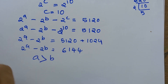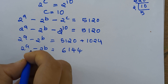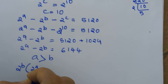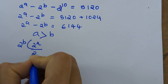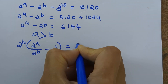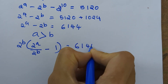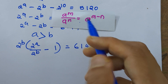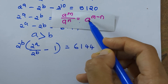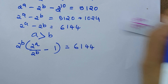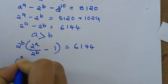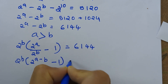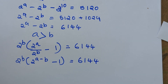Since 6144 is positive, a is greater than b. We can take 2 raised to b outside, giving us 2 raised to b into 2 raised to a divided by 2 raised to b minus 1, equal to 6144. Applying the law a raised to m by a raised to n equal to a raised to m minus n, we get 2 raised to b into 2 raised to a minus b minus 1, equal to 6144.